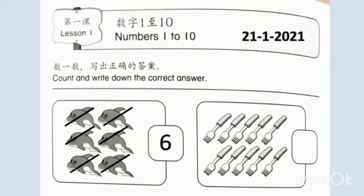Now, let's count the forks. 1, 2, 3, 4, 5, 6, 7, 8, 9, 10. So, the answer is 10.